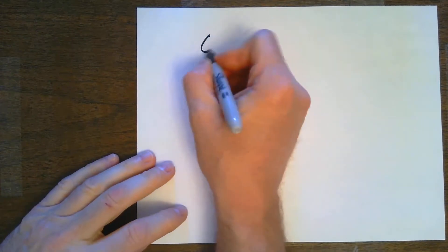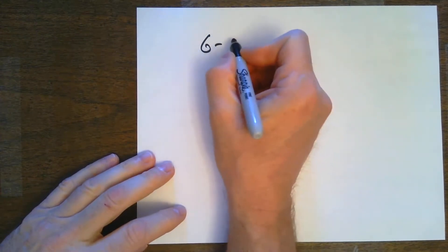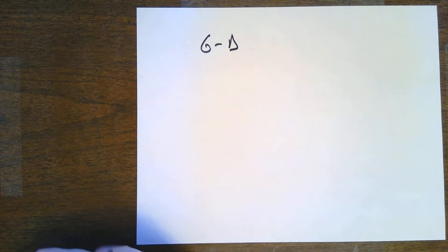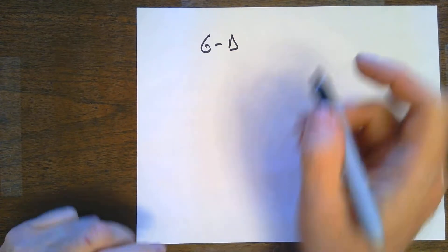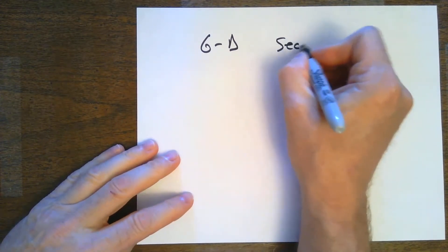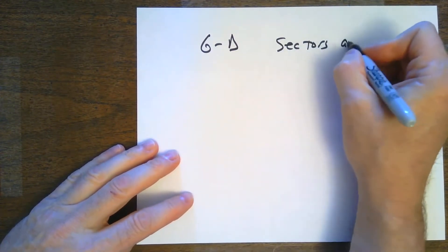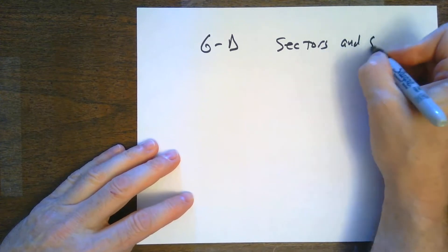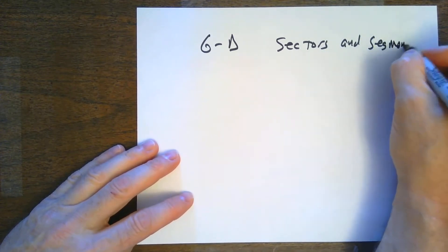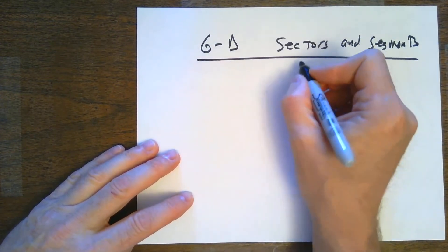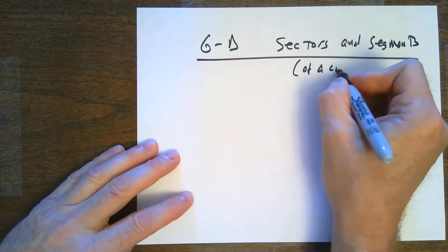Good morning, IB Math. We're going to move on to 6D, and we're going to talk about sectors and segments of a circle.